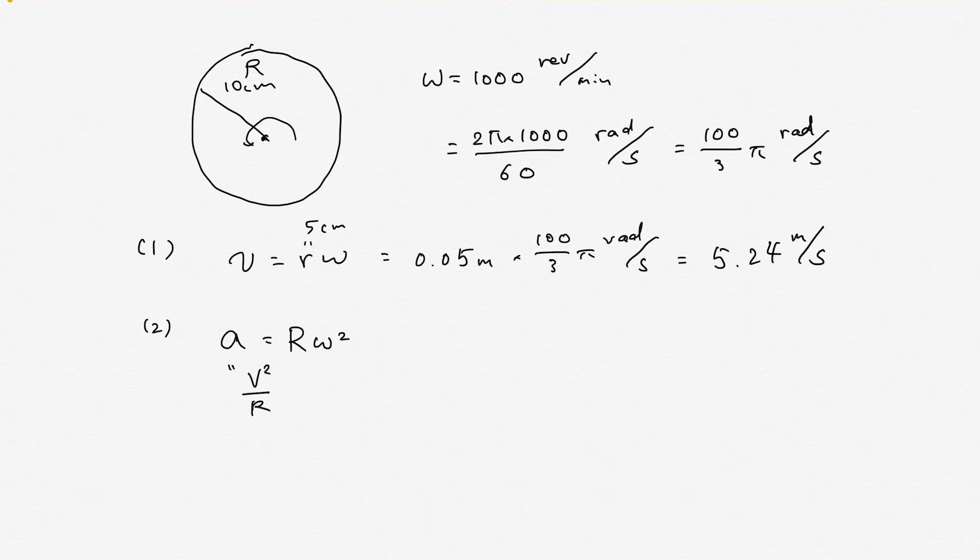And actually, v is in this case r·ω. So you can consider some point on the rim. The velocity is capital V. So this is r·ω. Acceleration can be expressed as V²/r, or R·ω².